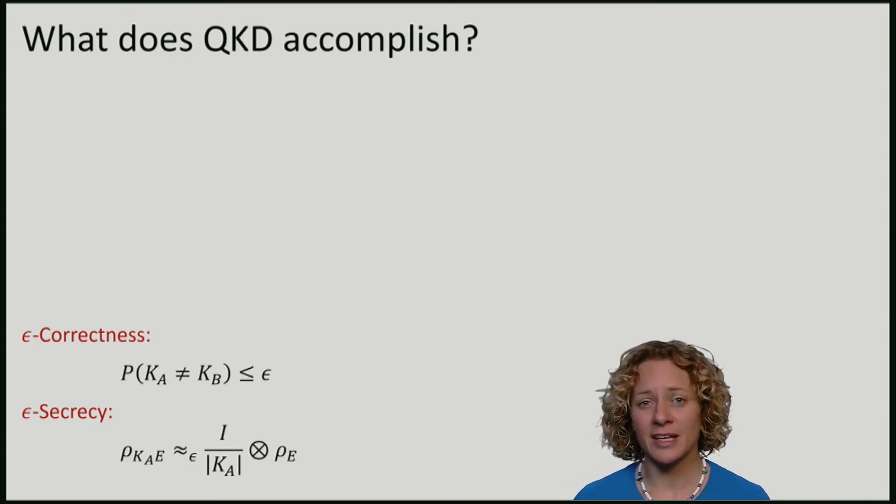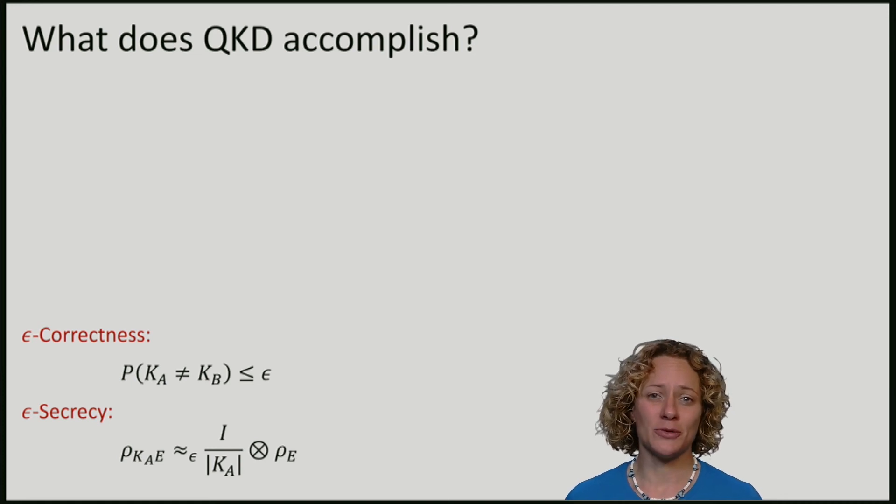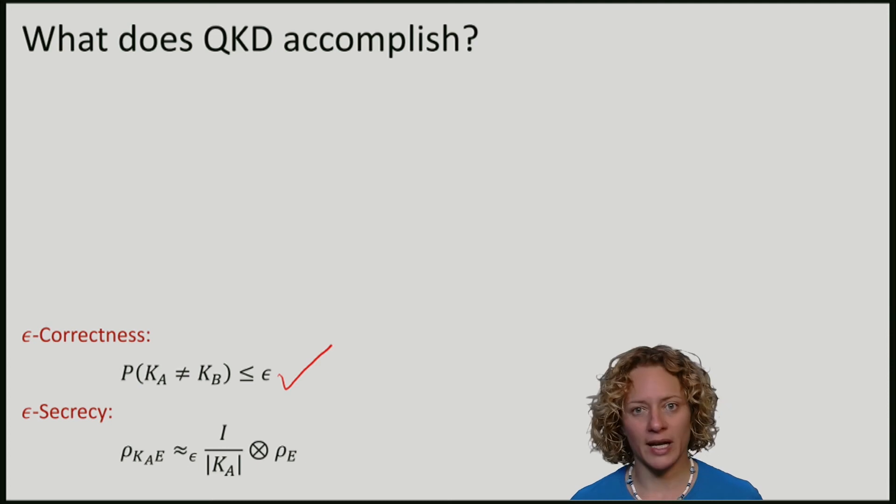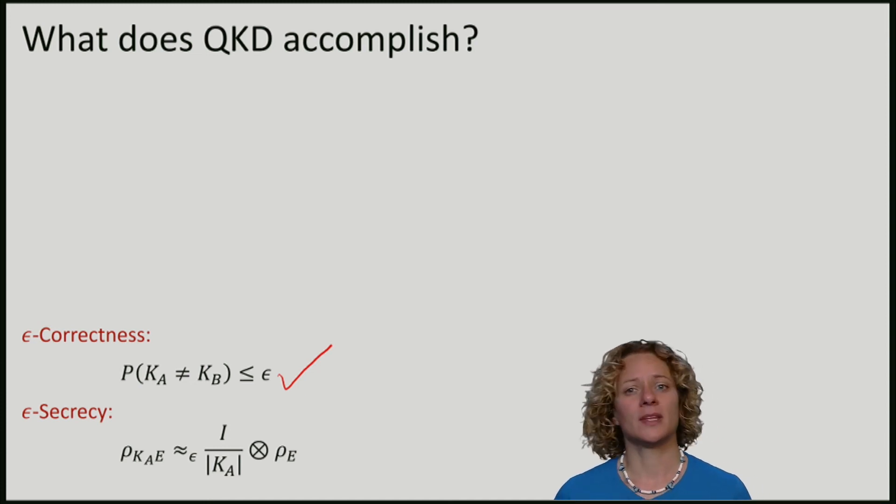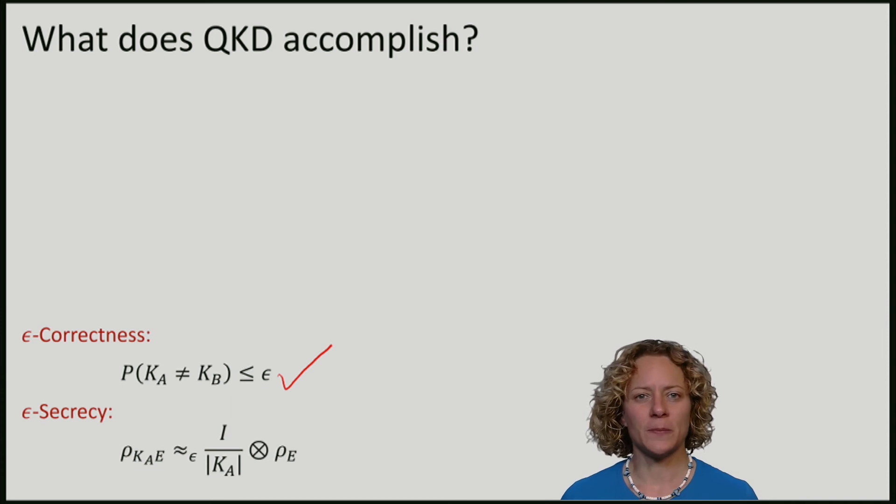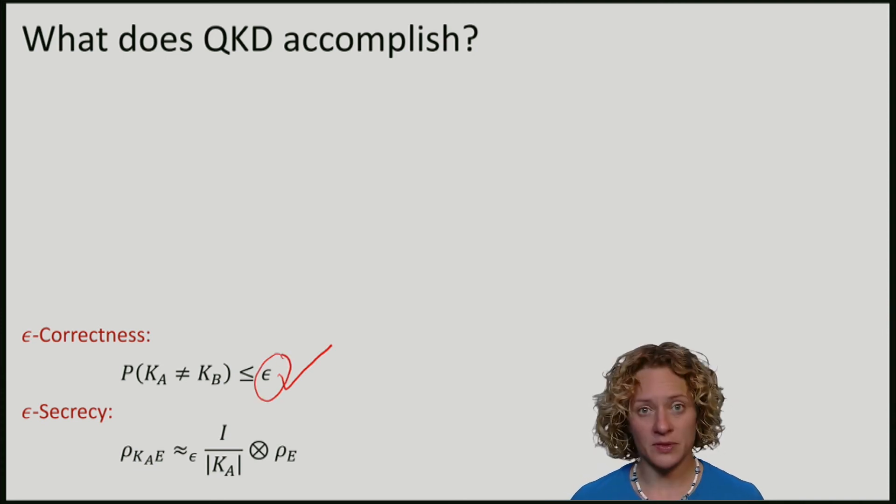First of all, it should be correct, meaning that the key Ka that Alice outputs and the key Kb that Bob outputs are equal to each other, except with some small error probability epsilon.